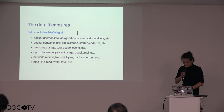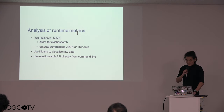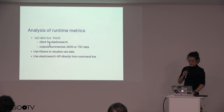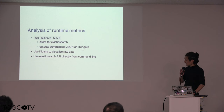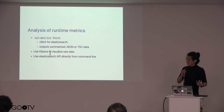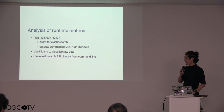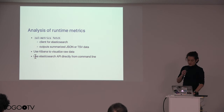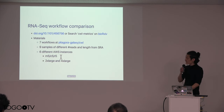I am going to upload the slides later. You can run CWL metrics fetch to capture the metrics data from Elasticsearch. The output format will be JSON or TSV — you can specify. You can also use Kibana, which is the visualization platform for Elasticsearch, showing raw data captured every 60 seconds. You can also write your own script to hit the Elasticsearch API for custom analysis.